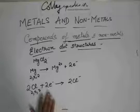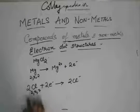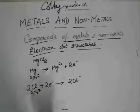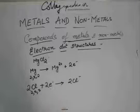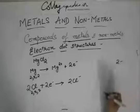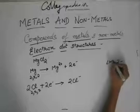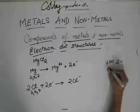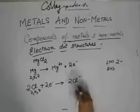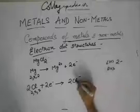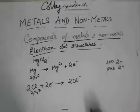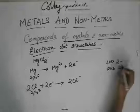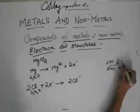Here also the charge is balanced. On the left-hand side, chlorine has zero charge, and two electrons give two negatives. On the right-hand side, you have two Cl⁻ ions, which is also two negative. So both sides are two minus — the equation is balanced.